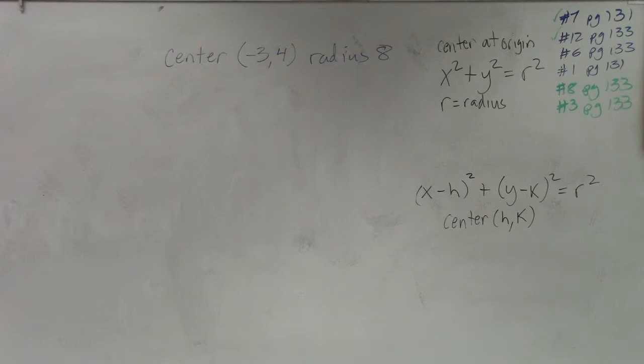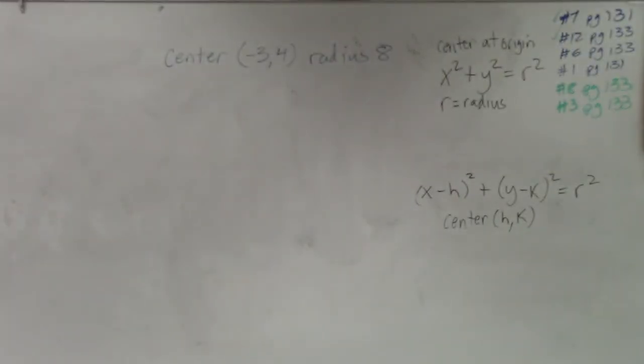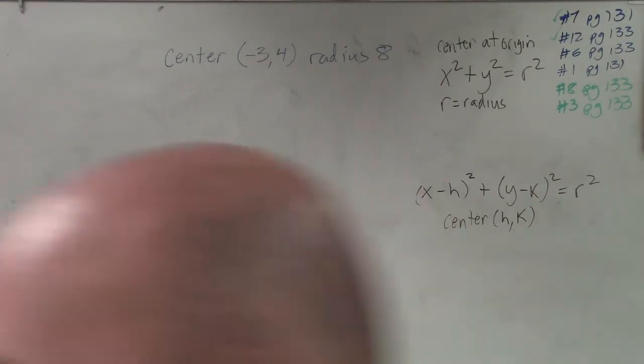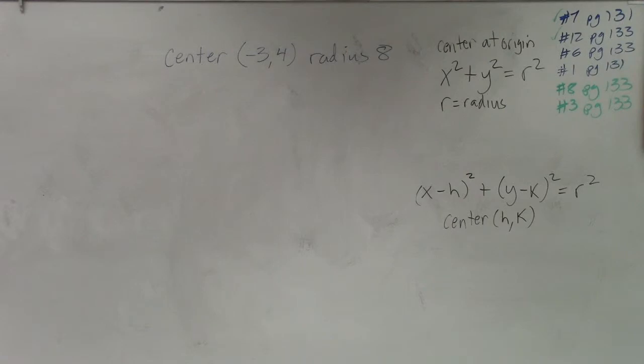What I'd like you guys to do is see if you guys, based on the information that I'm providing you right now, if I tell you there's a center negative 3, 4, and a radius 8, why don't you guys go and see on your own, see if you can figure out what is the equation of that circle. So I gave you guys two formulas. See if you can do it.